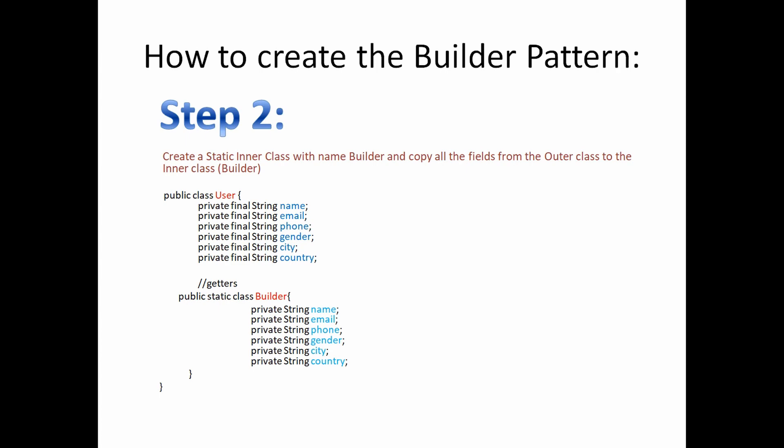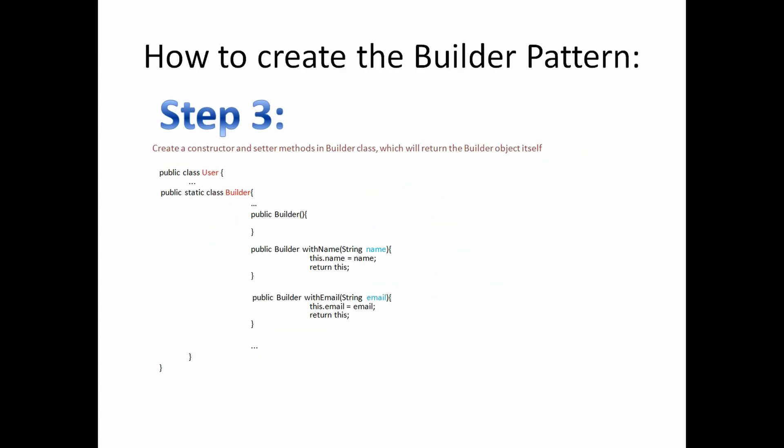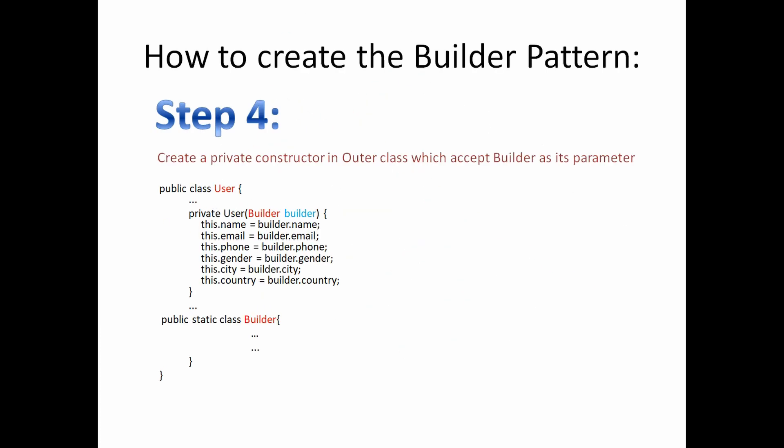In the next step we will create a constructor and setter methods in the Builder class. As you can see, we have created a constructor and setter methods with name withName, withEmail, and similarly we will create setter methods for other fields like city, country, and so on. In the next step we will create a private constructor in our User class which will accept Builder as its parameter, and this Builder class will be responsible to set up the fields in the User class.